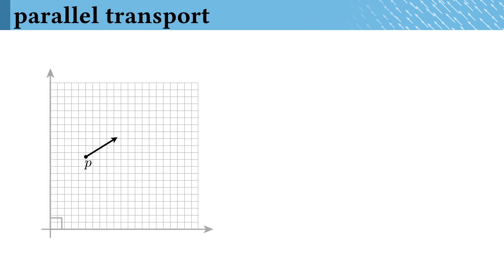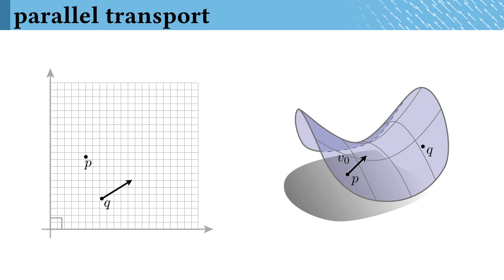You see, parallel transport is a special challenge that arises when working with vectors on surfaces. In the plane, it's easy to move a vector between different locations—you simply translate it. On surfaces, however, it's not so obvious how to transport a vector to a distant location.